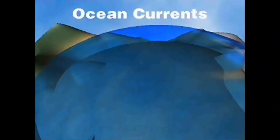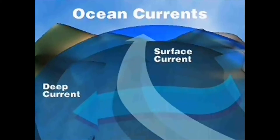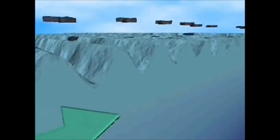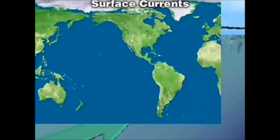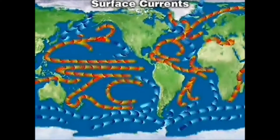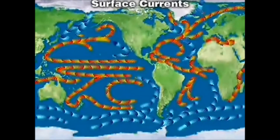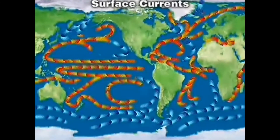There are two main types of ocean currents: surface currents and deep currents. Surface currents are set in motion by the friction of prevailing winds pushing against the sea. As they circulate, they carry warm water away from the tropics and cool water away from higher latitudes.